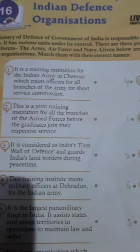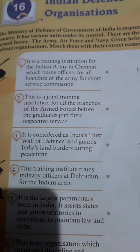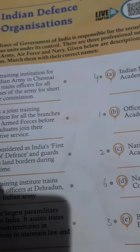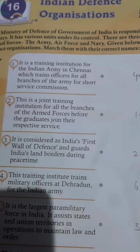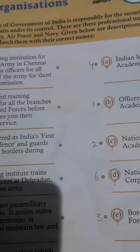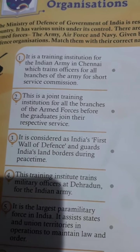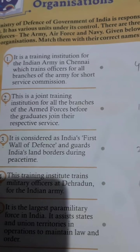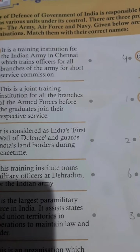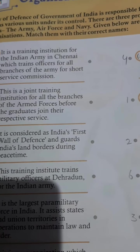Our chapter 16 is Indian defense organizations. The Ministry of Defense of the Government of India is responsible for the security of our country and has various units under its control. There are three professional units of the armed forces: the army, the air force and the navy — which protect India by land, air and waterways respectively.